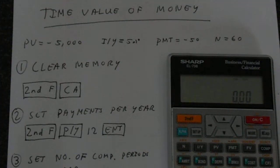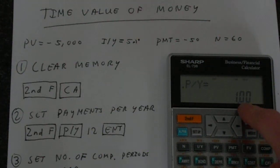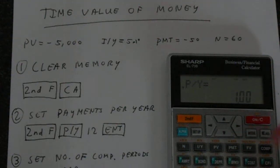First thing we need to do to actually do the calculation is set the number of payments per year. So second function, then you've got P/Y above the I/Y button. So press that and let's continue to here. We're doing monthly, so you're going to set that to 12. So 12 and enter.